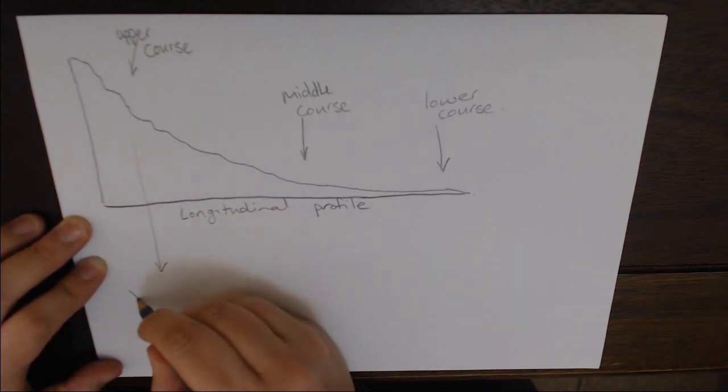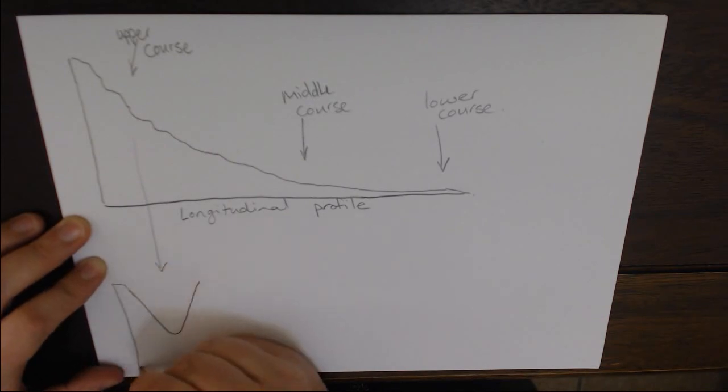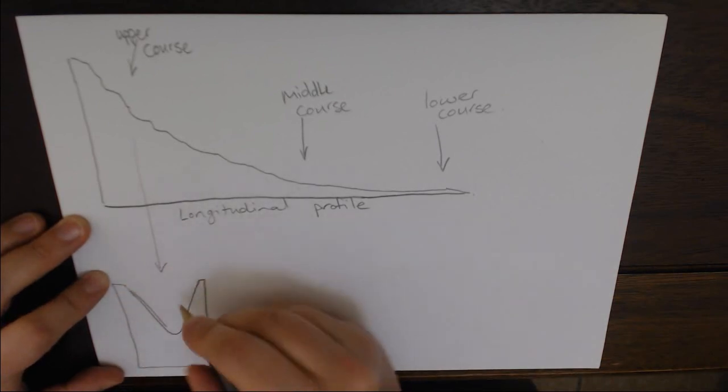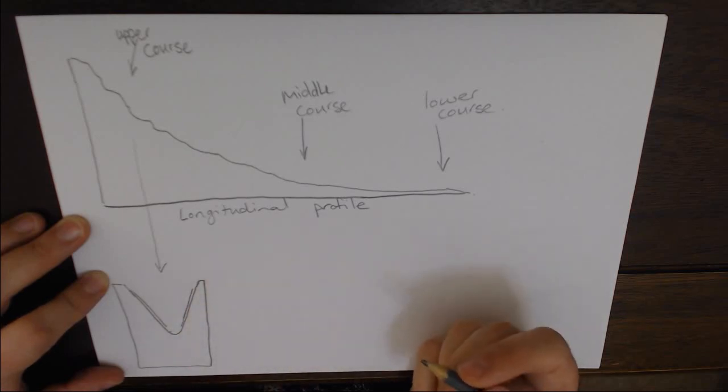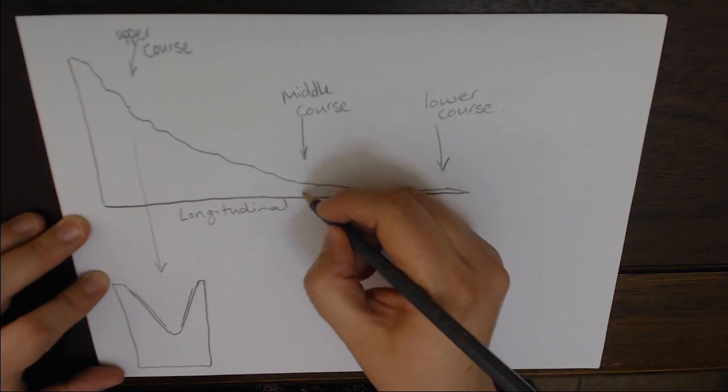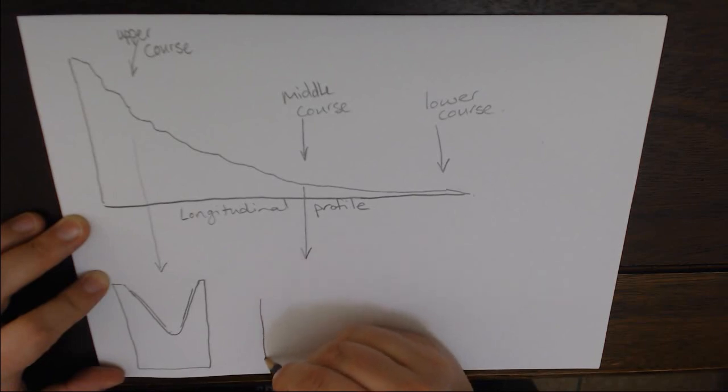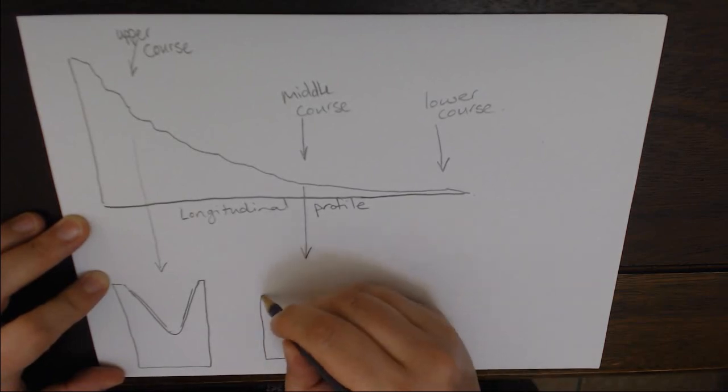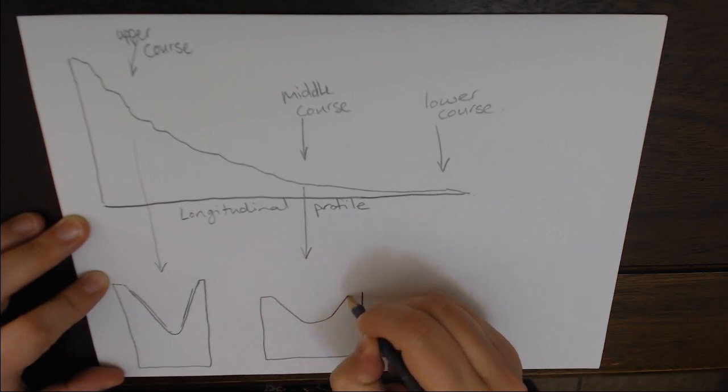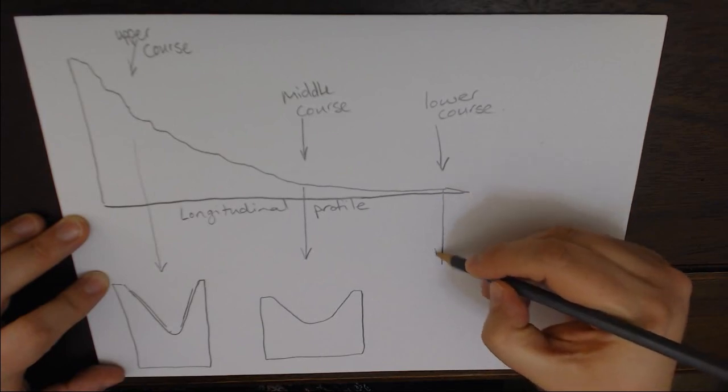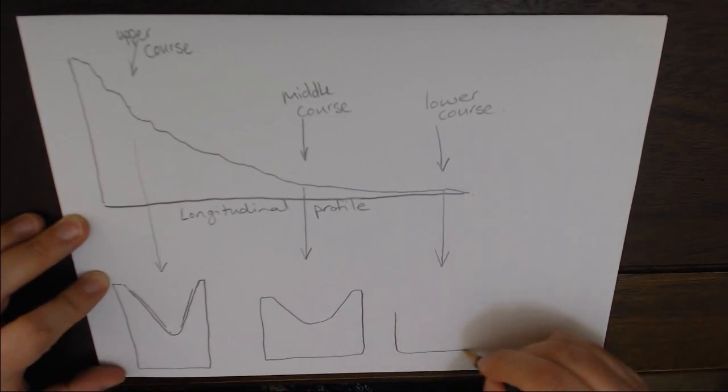What I've drawn here is the transverse profiles of the river. At the upper course, we've got a V-shaped valley - very steep sides. At the middle course, it starts to get a little bit more eroded. We've got a lot of weathering happening in the middle course, so you'll find that V-shape will still be there, it just won't be as pronounced. You've got hills but the valley's gotten a bit wider.